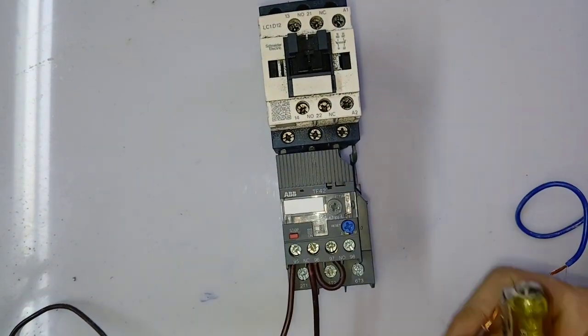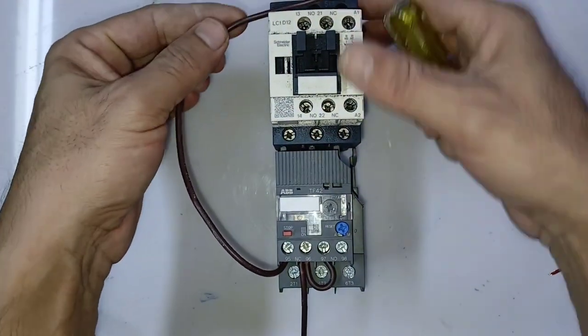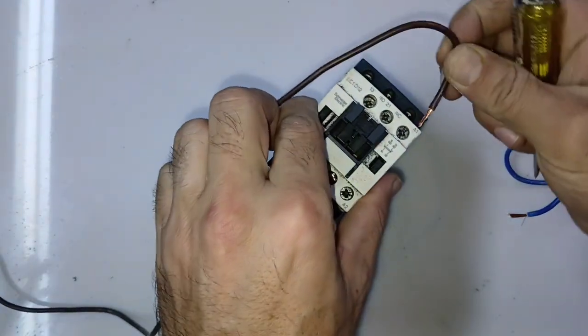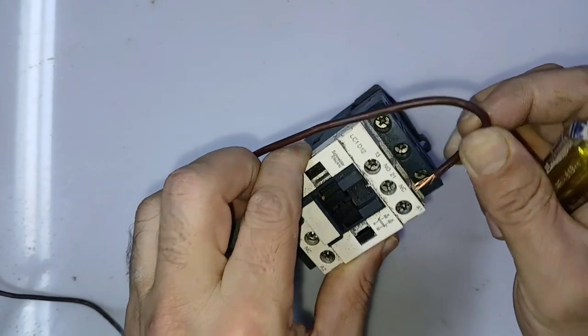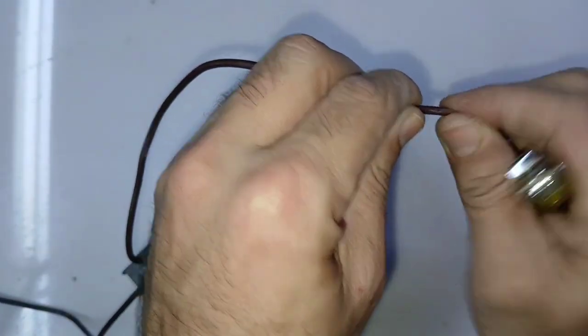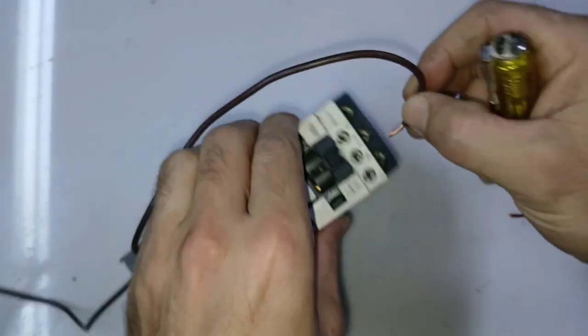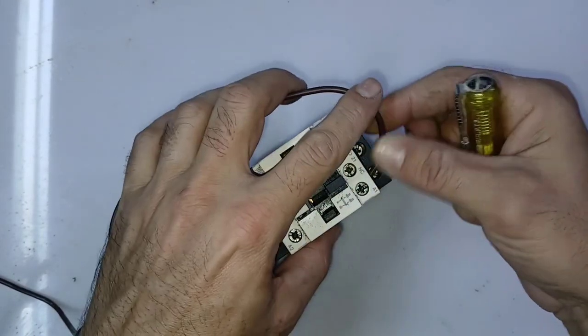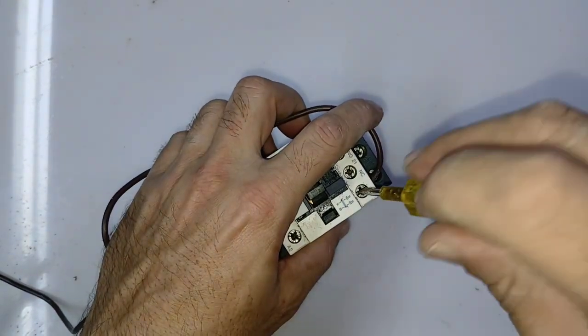The cable will connect with 95 and will go to the contactor. The line will go through the NO point to contactor A1. Contactor has A1 and A2 - neutral and line. So line will go to A1.